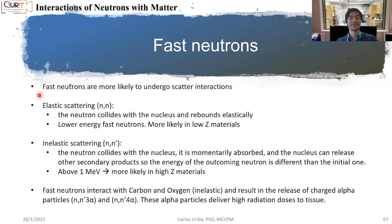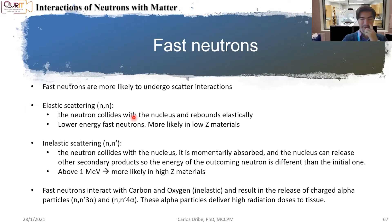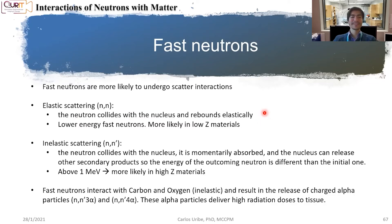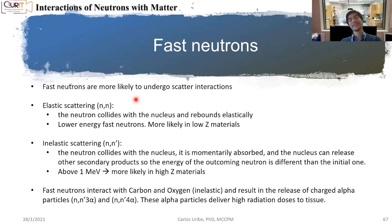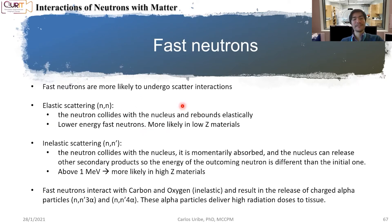We have two possible scenarios. One is elastic scattering, where the neutron collides with the nucleus and rebounds or scatters elastically — it doesn't lose any energy. So the neutron you had at the beginning is basically the same as the neutron you have at the end. This typically occurs more likely when neutrons are traveling in low Z materials.